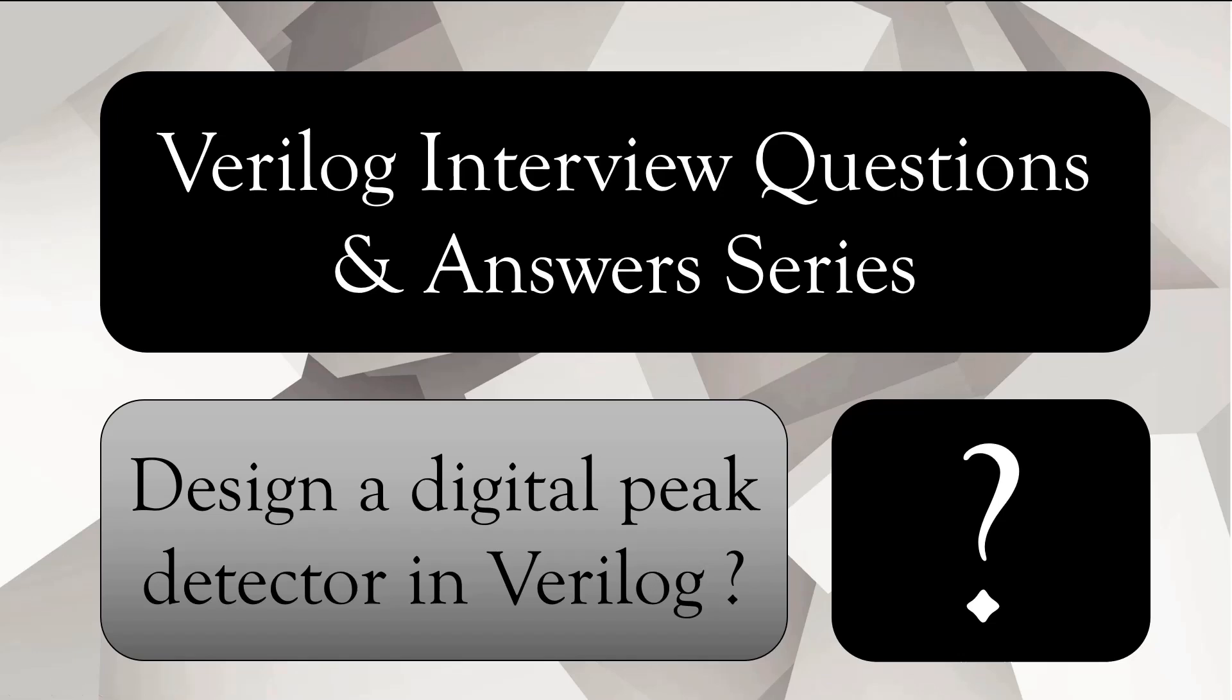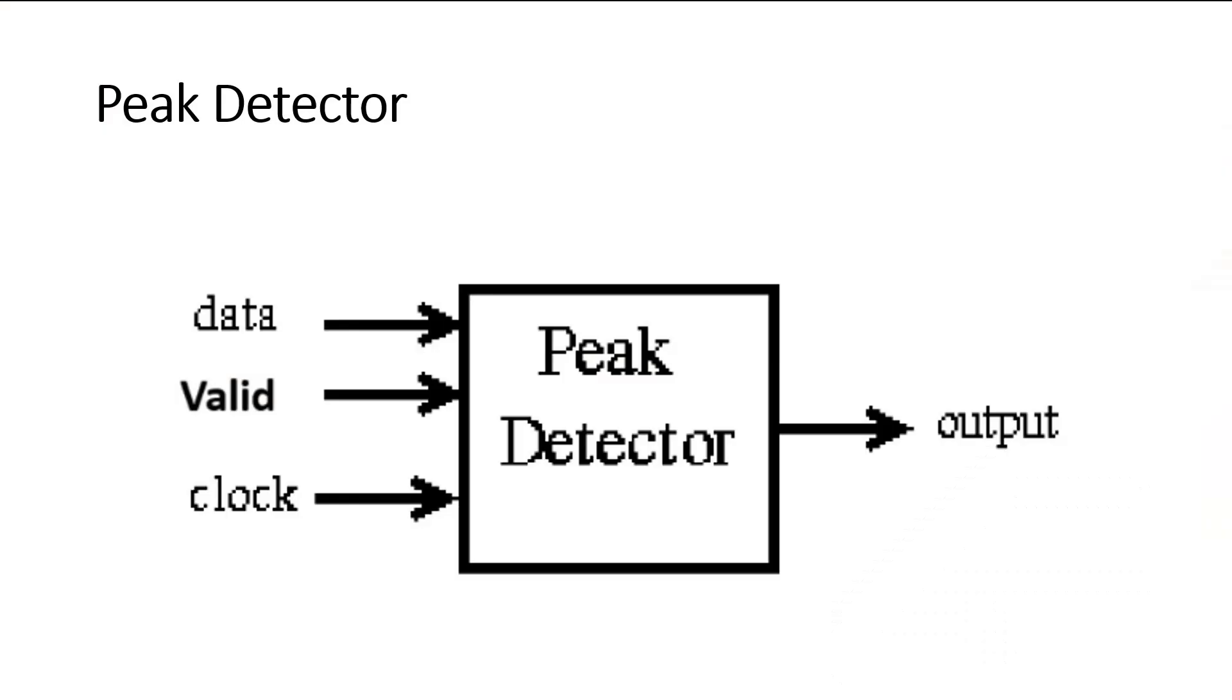Now let us see what is this digital peak detector. This is a simple pin diagram of a peak detector. It has three inputs, one output. Inputs are data, valid, and clock.